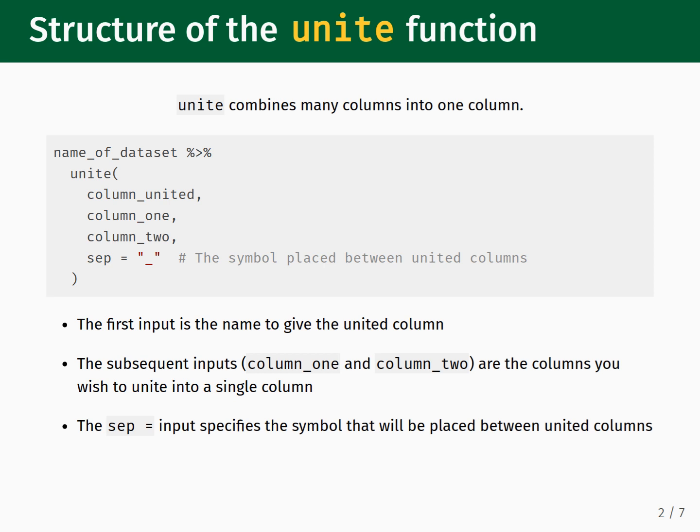The structure of the Unite function is as follows. We pipe the dataset into the Unite function, and for the first input we provide what we would like the name of the final united column to be. The subsequent inputs will be the names of the columns that we wish to unite into a single column. We can provide as many column names as we want. After listing the columns we want to combine, we then provide the SEP input, which specifies the symbol that will be placed between the values of the united columns.